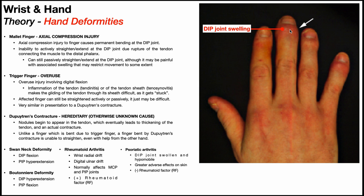Psoriatic arthritis is going to have greater adverse effects on the skin. It's not always associated with psoriasis, but many times it is, and psoriasis can occur on the hands or very commonly on the elbows, presenting as dry, flaky, scaly skin. Psoriatic arthritis specifically refers to the joints being affected — it is a different disease than psoriasis alone. To have psoriatic arthritis, you must have an autoimmune disease specifically attacking the joints of the hands and feet.